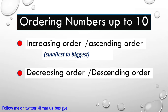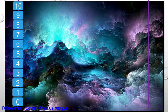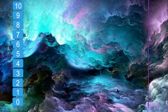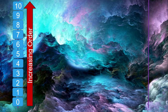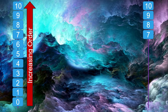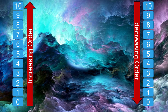descending order, and this is the order from the biggest to the smallest. Now if we move from 0, 1, 2, 3, 4, 5, 6, 7 up to 10, then we have what we call increasing order. But if we move from 10, 9, 8, 7 down to 0, then we have what we call the decreasing order.